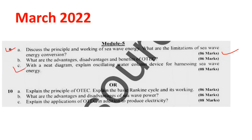Similarly, question number 9c is also from wave energy only. With a neat diagram, explain the oscillating water column device for harnessing sea wave energy. There are different devices which are helpful for harnessing energy from sea waves — one example is the oscillating water column type device. Question number 10b is also from this part: what are the advantages and disadvantages of sea wave power?